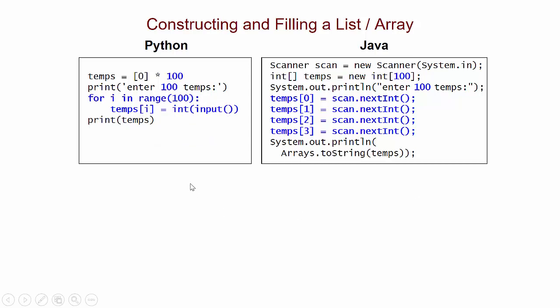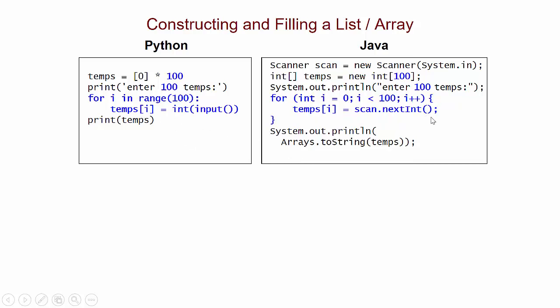an index-based loop. And we've seen these in Python in the past. So here's what the Python loop looks like. Here's the corresponding Java for loop.